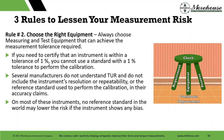Rule number two: choose the right equipment. If you need to certify that an instrument is within tolerance of 1%, you cannot effectively use a standard with a 1% tolerance to perform the calibration. When you're doing a one-to-one, it's really hard to tell consumer risk from producer's risk unless everything is centered in a line. Several manufacturers don't understand test uncertainty ratio — they might not include the instrument's resolution, repeatability, or the reference standard used to perform the calibration in their accuracy claims.